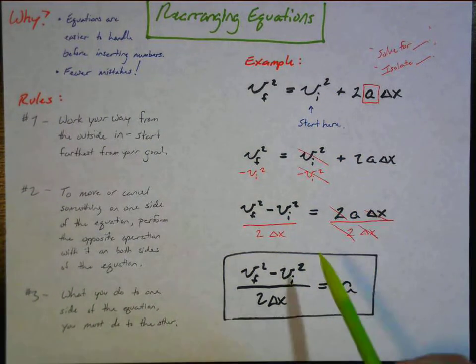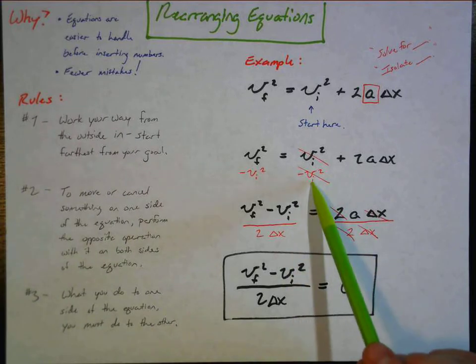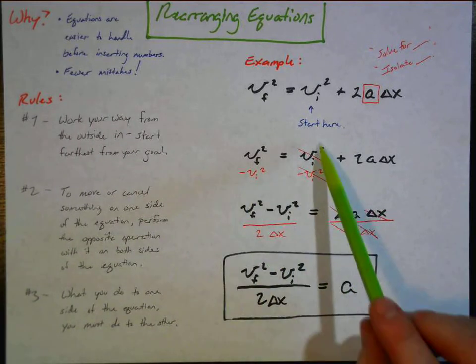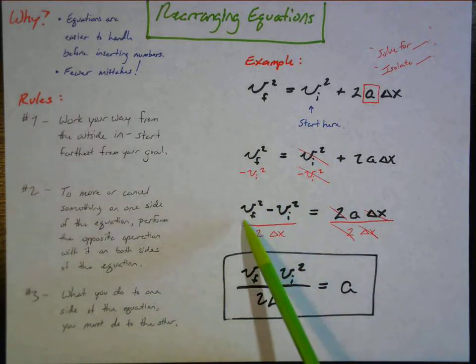So you see it's doing that here, subtracting initial velocity squared from both sides of the equation. On this side it cancels out, on this side it doesn't so it stays there.